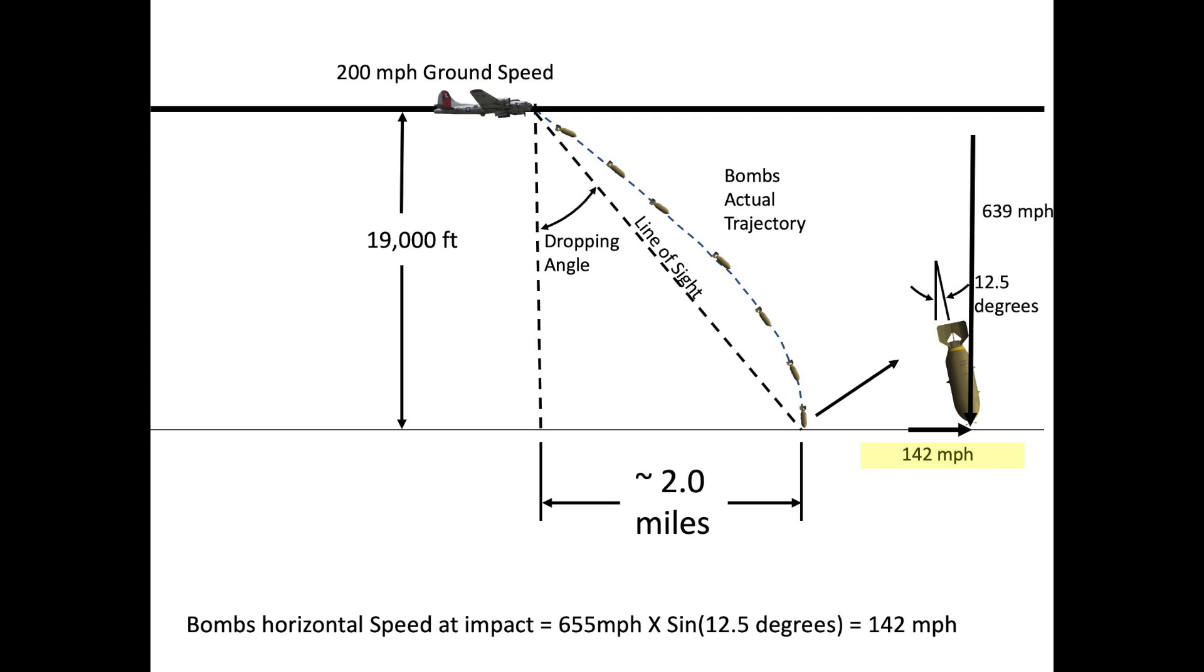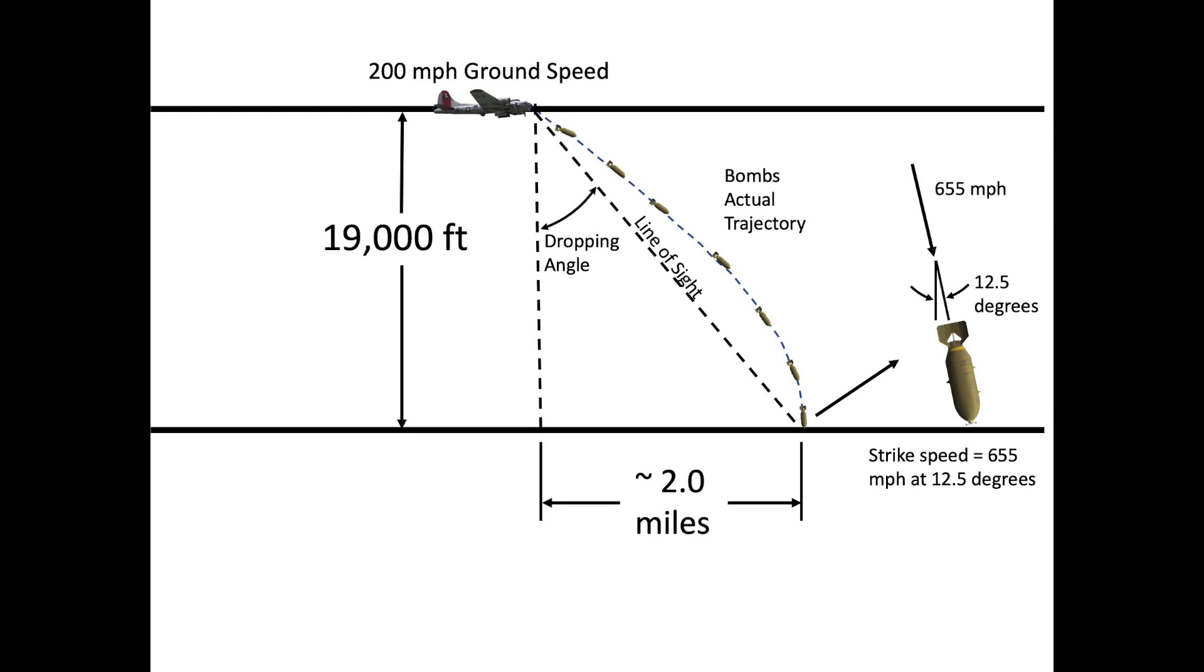To recap, an AN-M64 500-pound general purpose bomb released from a 19,000-foot altitude from a bomber traveling at 200 miles per hour true ground speed will strike the ground at a speed of 655 miles per hour at a 12.5 degree angle.